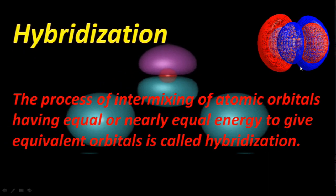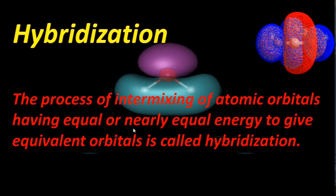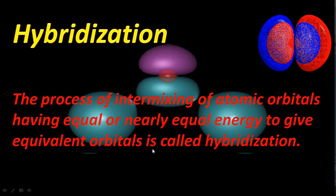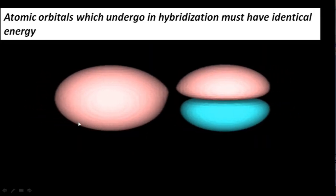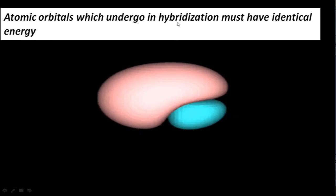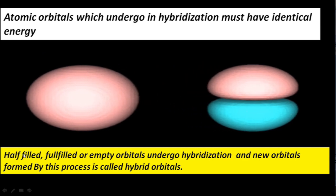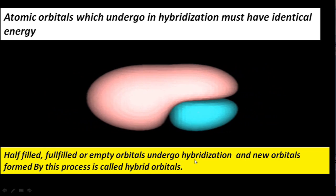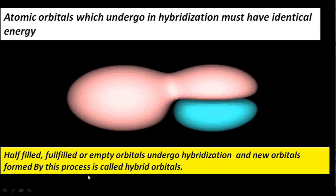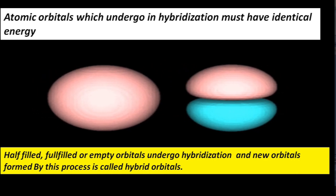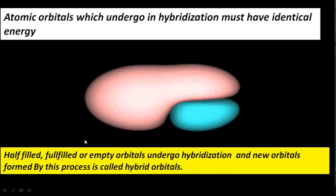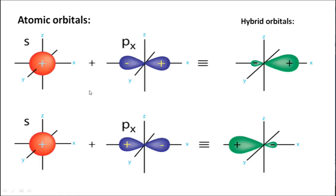Hybridization is the process of intermixing of atomic orbitals having equal or nearly equal energy to form equivalent orbitals. Atomic orbitals which undergo hybridization must have identical energy. Half-filled, full-filled, or empty orbitals can undergo hybridization, and the new orbitals formed by this process are called hybrid orbitals. For example, atomic orbitals S and PX give SP hybrid orbitals, which possess characteristics of both atomic orbitals from which they are formed.